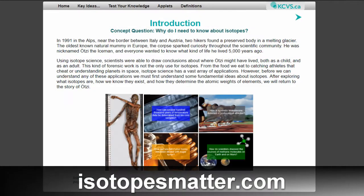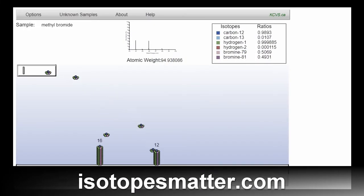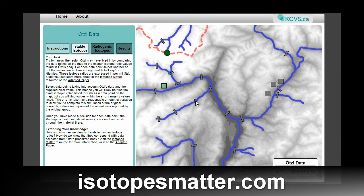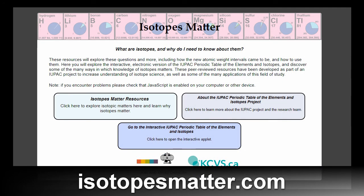If you'd like to see the IUPAC interactive periodic table of the elements and isotopes, or if you'd like to learn more about the nature of isotope science, go to isotopesmatter.com. The accompanying suite of resources, called Isotopes Matter, provide educational material related to the study and understanding of isotope science, and feature interactive learning tools to promote a better understanding of what isotopes are and why they matter.